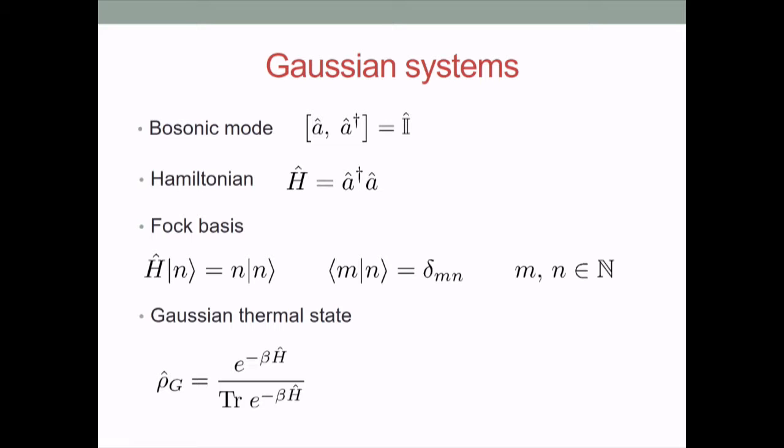We can introduce Gaussian thermal states, which are simply the Gibbs states of the number Hamiltonian, states of this form. Here beta is positive and is the inverse temperature. If you send beta to infinity we recover the ground state of the Hamiltonian, which is the vacuum. These are not all the Gaussian states that exist — there are also the so-called squeezed Gaussian states — but we will not need them in the proof.